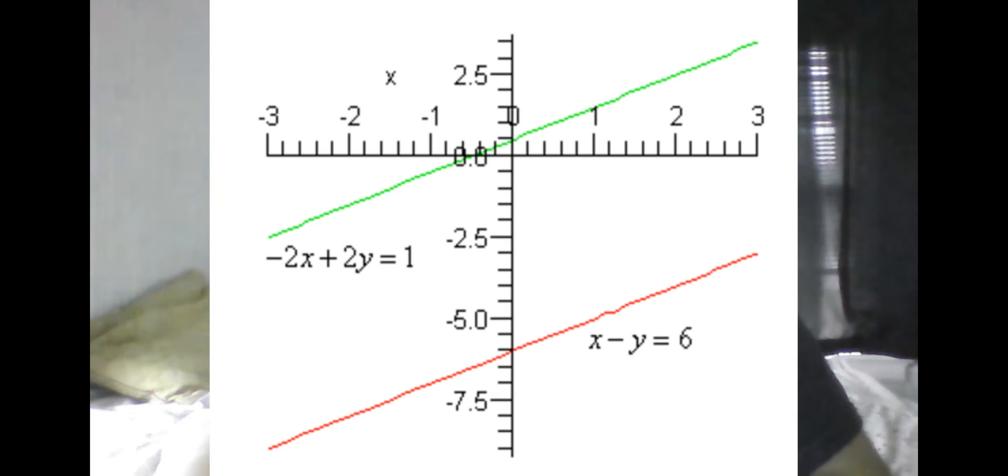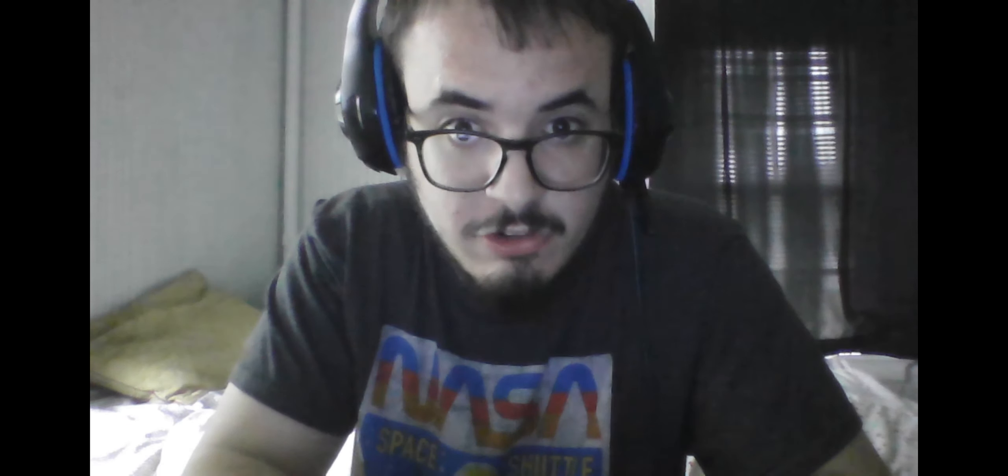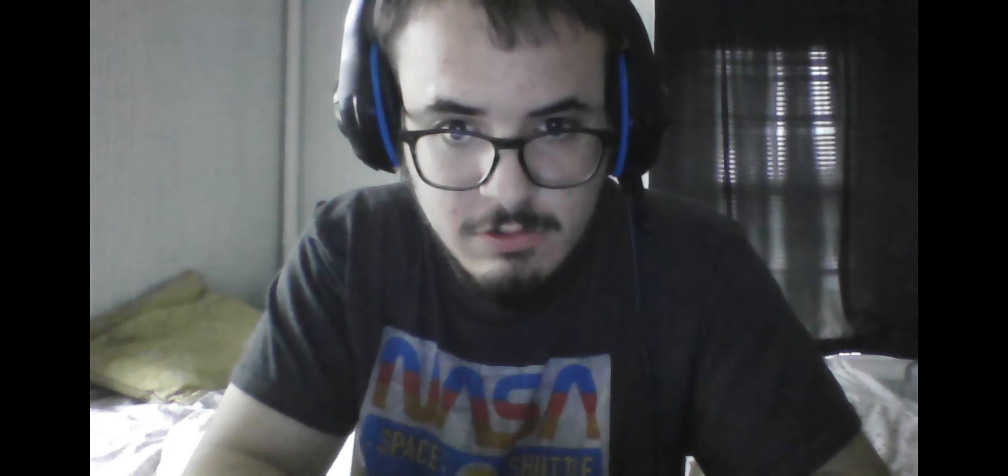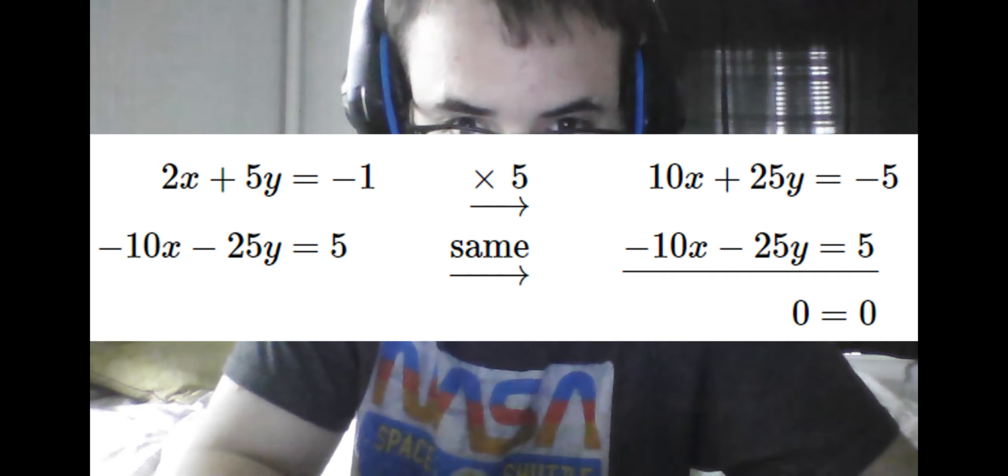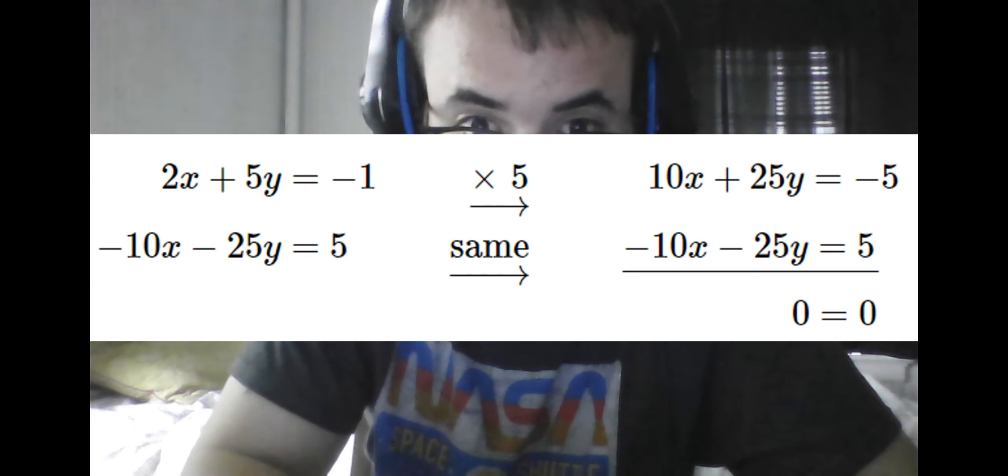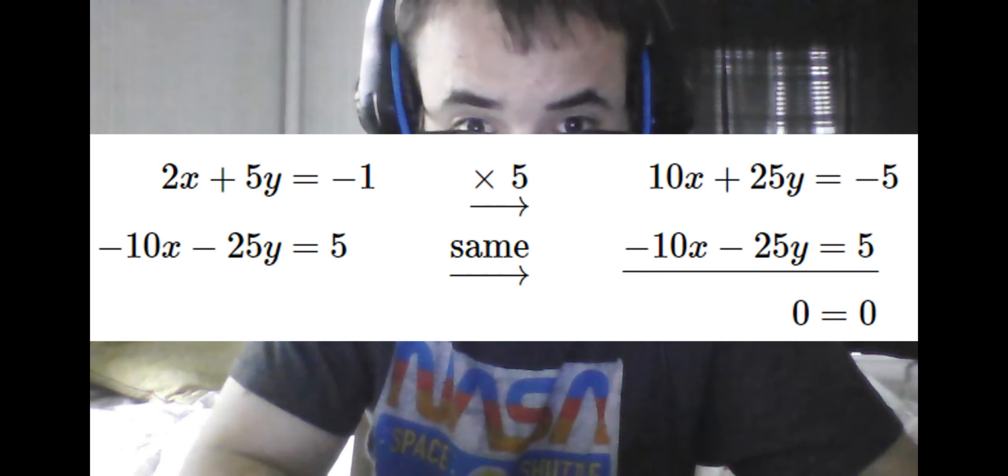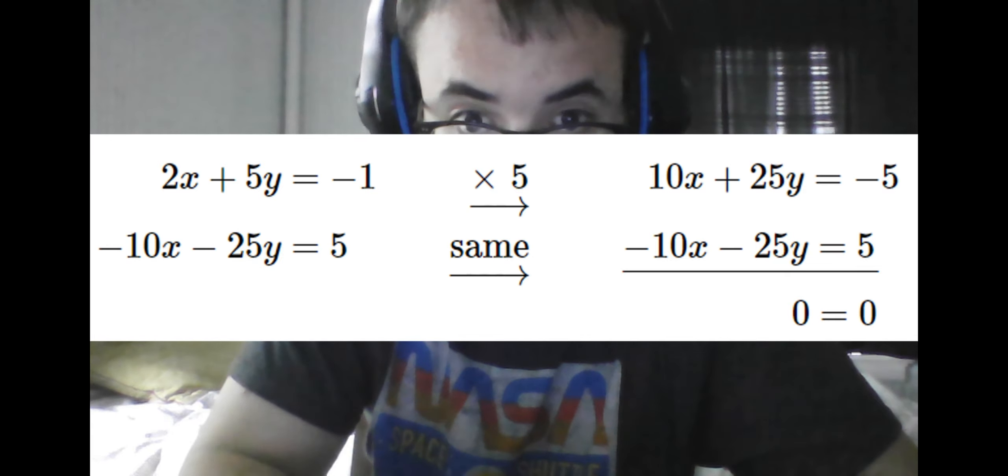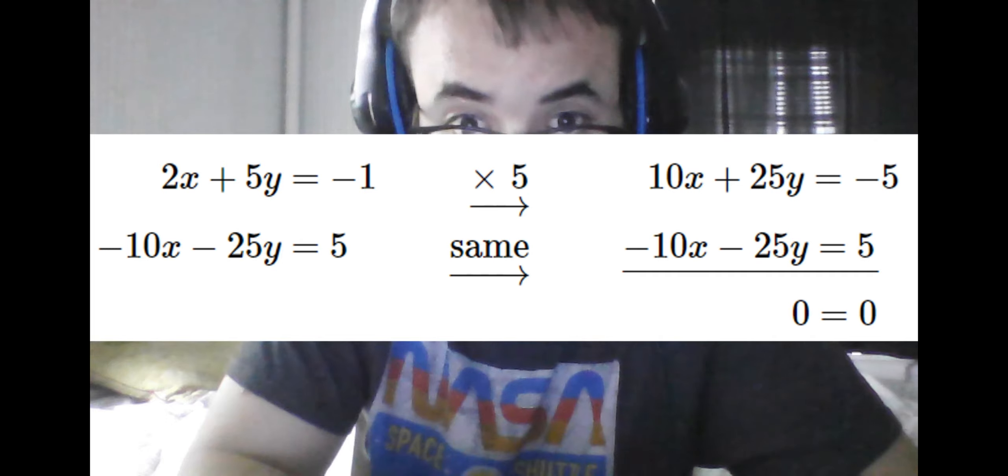However, we can have systems where the equations have the same slope and overlap each other like this. We see that there is no easy way to get x or y in terms of the other variable, so we elect to use the elimination method instead. We see when we get the least common multiple of either x or y, it actually becomes the least common multiple of both instances. Which means, with the method for elimination, both variables cancel out at the same exact time, leaving us with 0 equals 0.